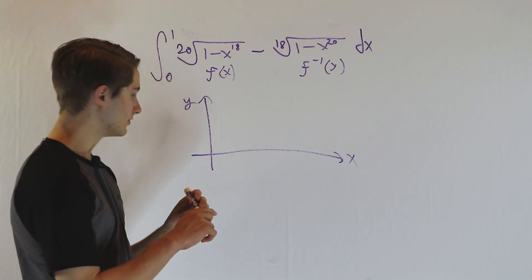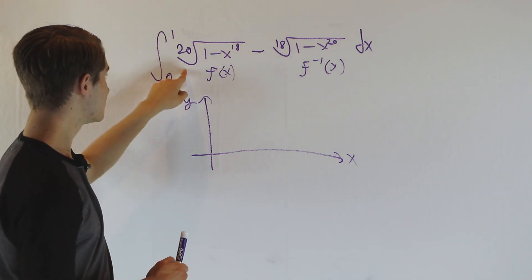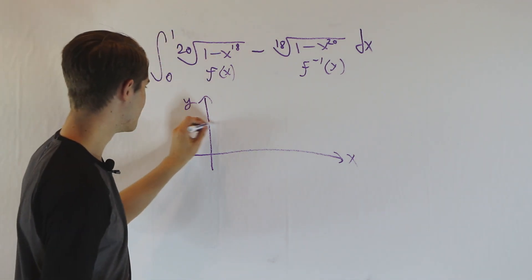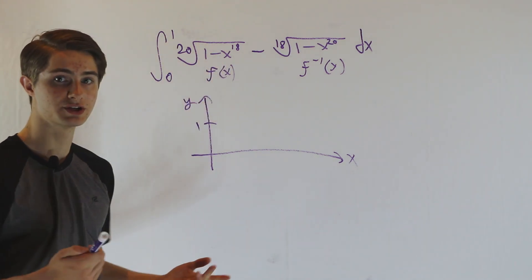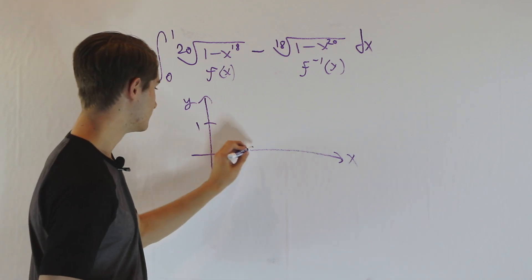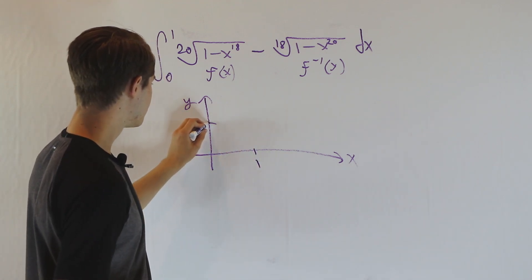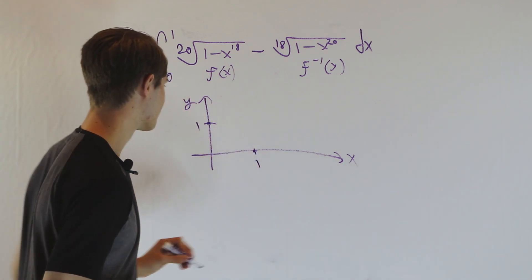If we plug in 0, we get the 20th root of 1, which is 1. If we plug in 1, we get the 20th root of 1 minus 1, so the 20th root of 0, which is 0. So the points (0,1) and (1,0) are on our graph.